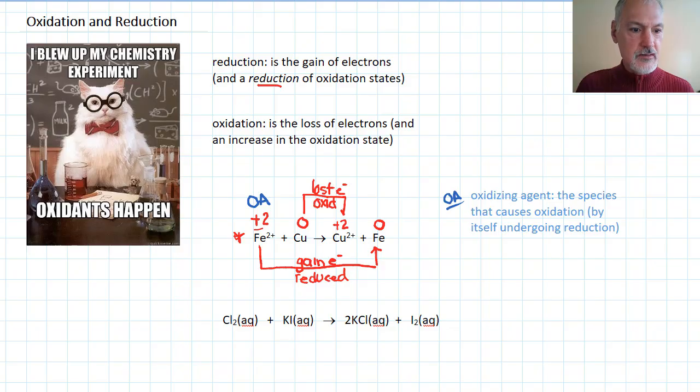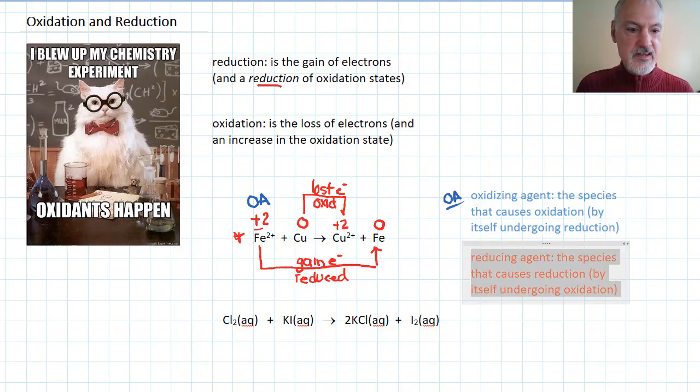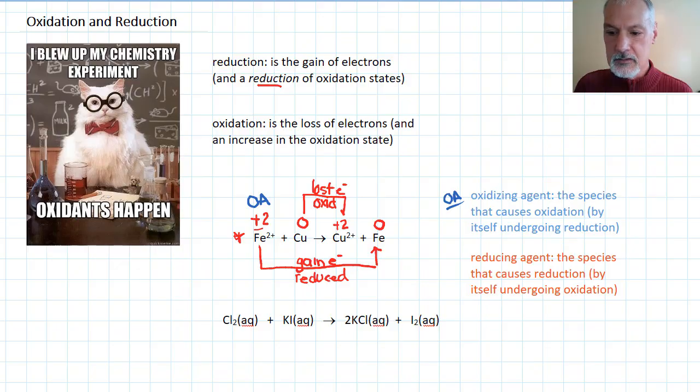Conversely, this reducing agent is identified as the species that causes reduction. While we've seen that the iron here has been reduced, the species that caused that would have been the copper. That, then, is my reducing agent. It's worth noting, the reducing agent actually undergoes oxidation. Similarly, the oxidizing agent actually itself undergoes reduction.